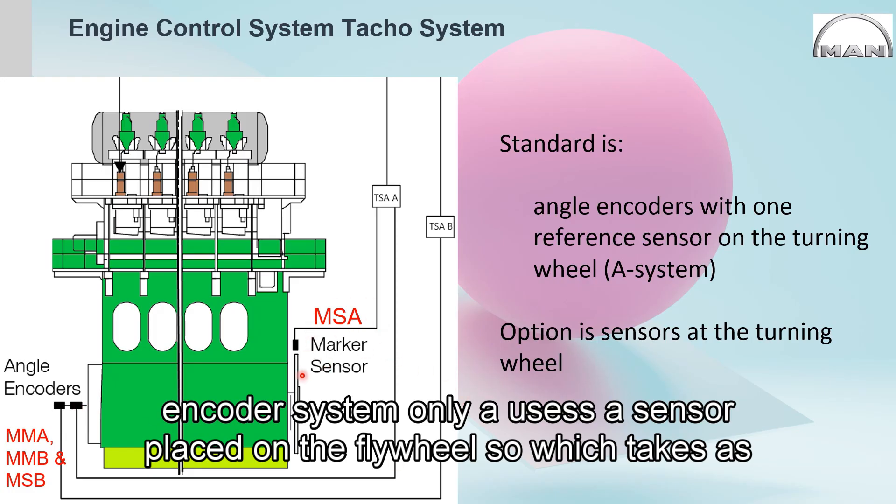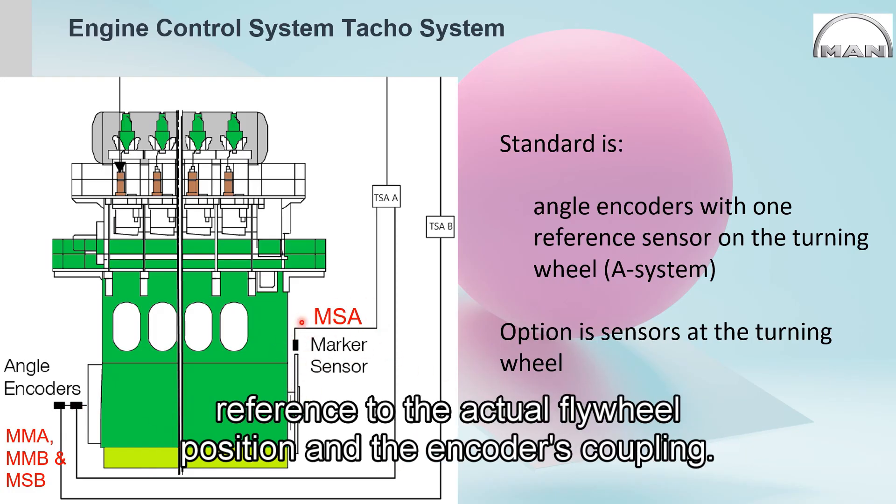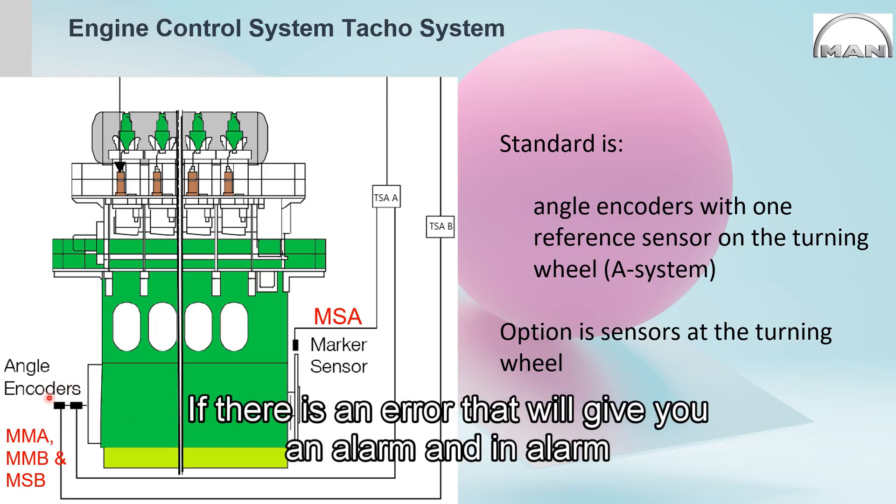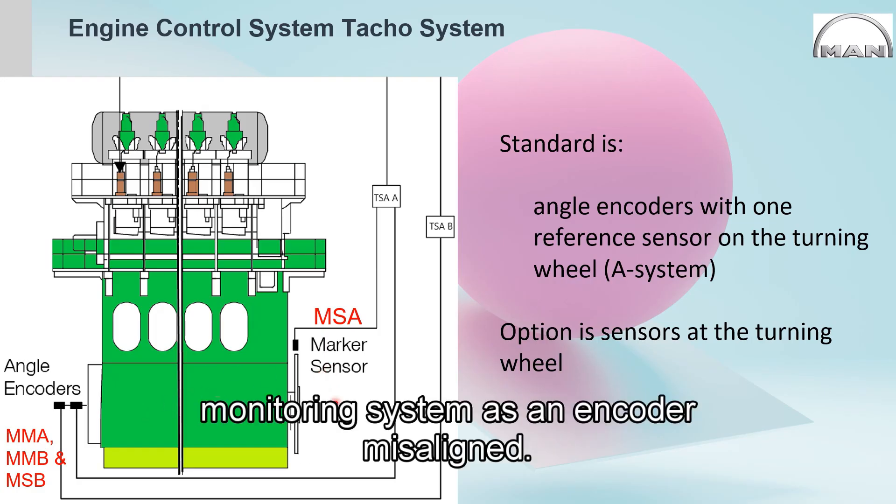So you need to have some reference. That's why the encoder A system, only MSA sensor, is placed on the flywheel, which takes as a reference to the actual flywheel position and the encoder coupling. Then there will be no error. If there is an error, that will give you an alarm in your monitoring system as encoder misaligned.